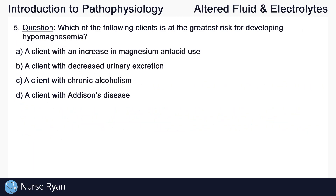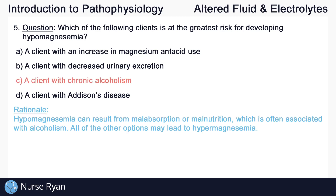Question number five. Which of the following clients is at the greatest risk for developing hypomagnesemia? This one is C, a client with chronic alcoholism. Hypomagnesemia can result from malabsorption or malnutrition, which is often associated with alcoholism. All of the other options may lead to hypermagnesemia.